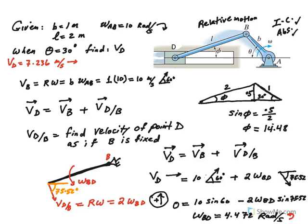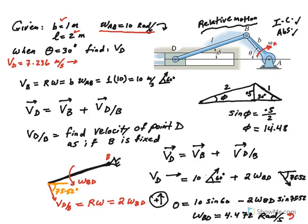We already solved it using the absolute and IC methods, and now we want to try the relative motion approach. We are given the dimensions: B, which is the crank, is 1 meter; the connecting rod has a length of 2 meters; and at this instant omega AB is given to be 10 radians per second, rotating clockwise.